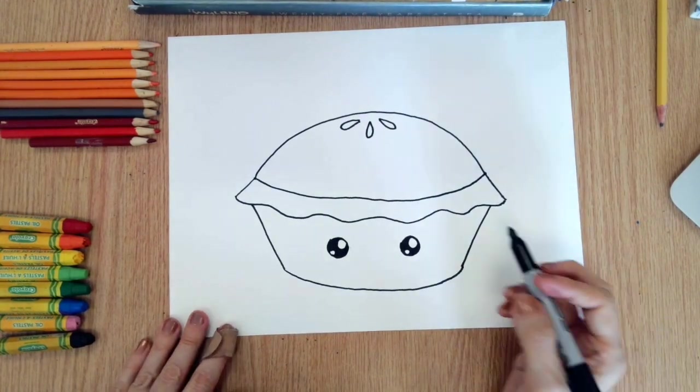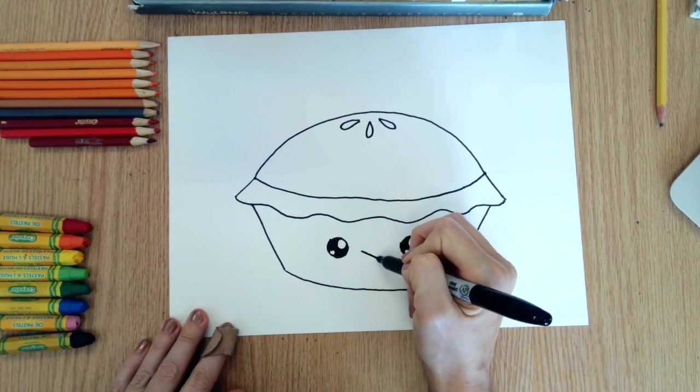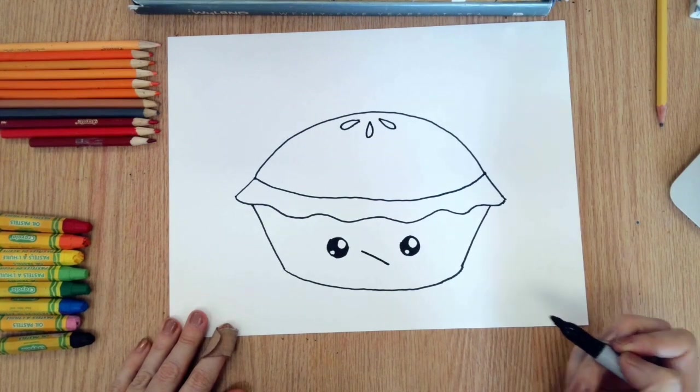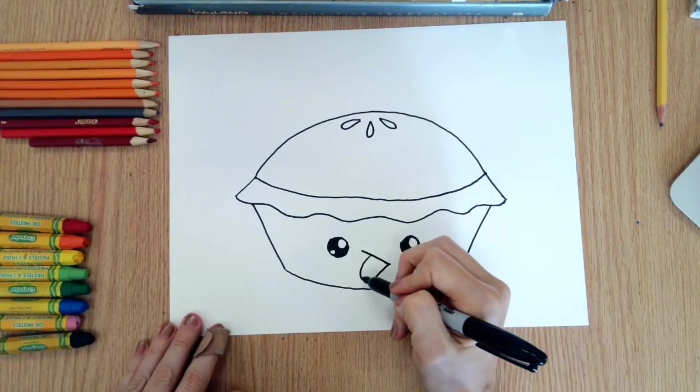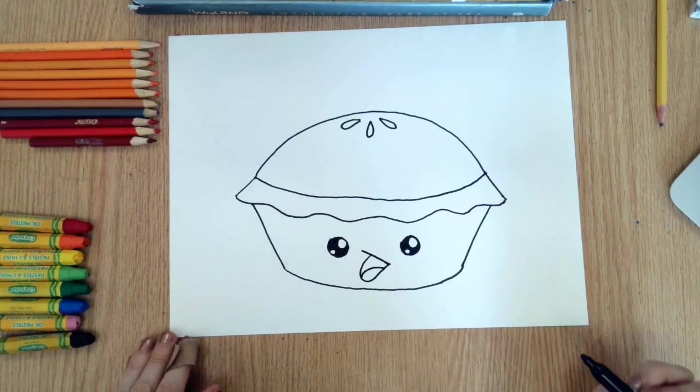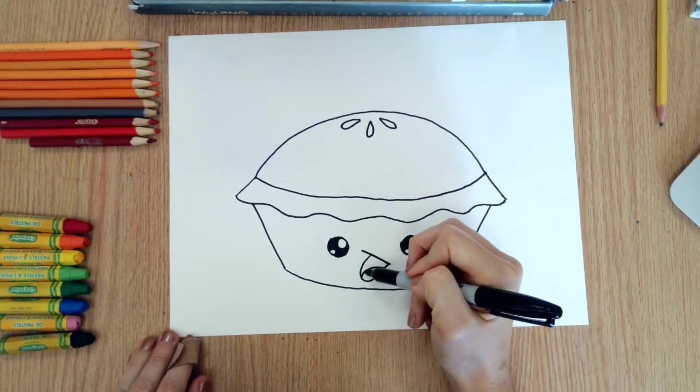Next I'm gonna make a mouth. Make a slanted line like that and I'm gonna go like this, and I'm gonna add a tongue. And I'm gonna color not the tongue but inside the mouth black.